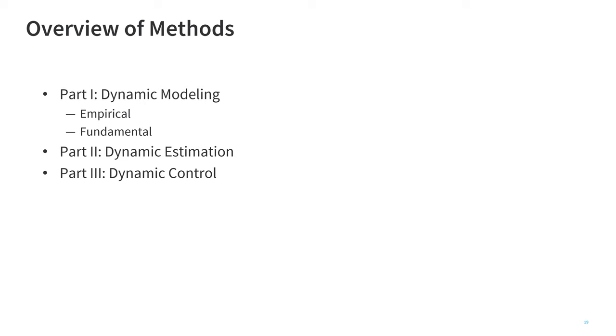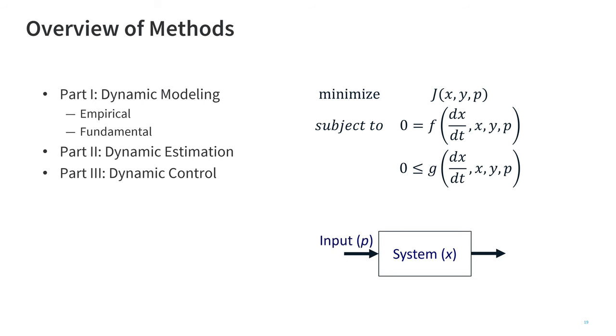So let me go through the three parts of the course in a little bit more detail. We have part one, which is going to be dynamic modeling, and that includes empirical or physics-based models. We also have dynamic estimation and dynamic control. We're going to fit all of those into a standard framework, where we have an objective function j subject to equality constraints f and inequality constraints g. And you can see the variables might be differential variables, such as x, or algebraic variables, such as y, or parameters or inputs, such as p. So the system is going to have inputs, p, that either we can adjust or we can measure, and then we're going to have predicted outputs, y. And our system model might be a machine-learn model or a physics-based model.